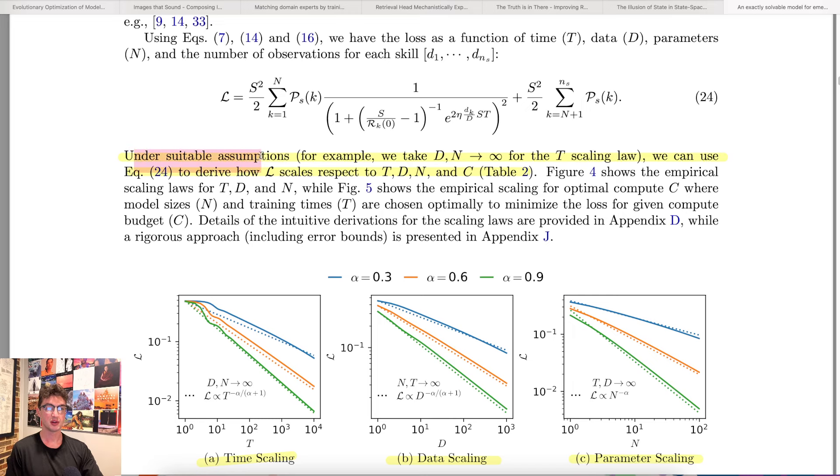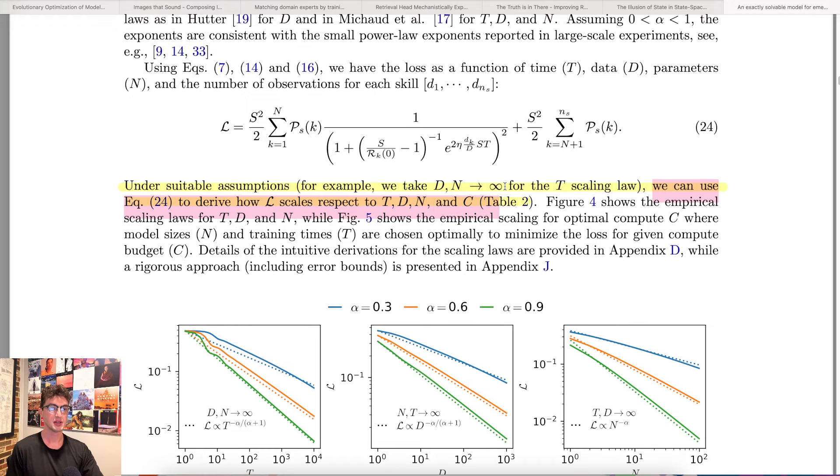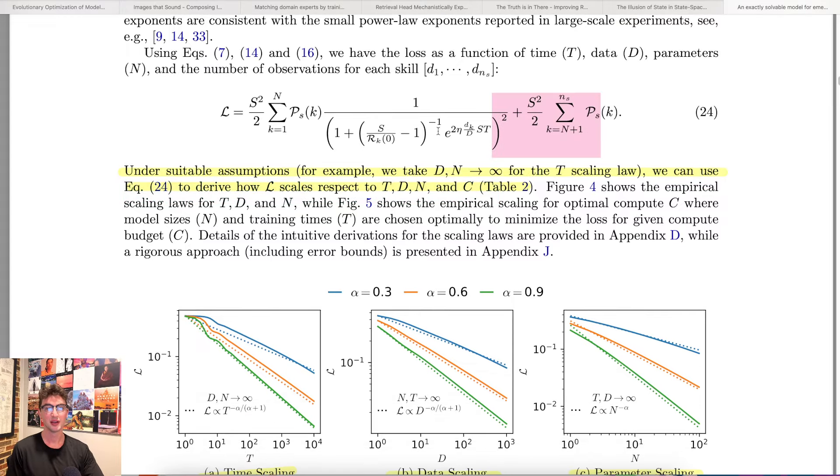Under suitable assumptions, for example, we take the data set size and I think number of parameters approaching infinity for the scaling law over training time. We can use the above equation to derive how the loss scales with respect to training time, data set size, number of parameters and C what was C? Oh, compute budget. Sorry. Yeah, of course compute budget. Which is a limitation on how much of the other three that you can use, right? Anyways, they derived an equation that lets them predict the actual loss given this very general system. And that in theory, if the actual real world data does in fact correspond to their model, then we should be able to use this equation to as the base to replicate Google's chinchilla findings would be the idea. Although in reality, the actual distribution match up perfectly, maybe not, but hopefully in theory, maybe.